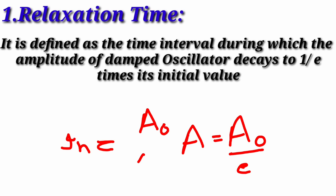The first term we will discuss is relaxation time. When we discuss these terms, we will cover three things: first, the definition of what the term is about; second, what the expression or formula is; and third, which factors the term depends on. So relaxation time is defined as the time interval during which the amplitude of a damped oscillator decays to 1/e times its initial value.